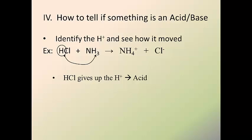Now, how do I know it went to the NH3? Well, if I look at it on the right-hand side, I can see that the NH3 became NH4. So I can see that the HCl gives up a hydrogen to the NH3 and the NH3 gains a hydrogen becoming NH4.